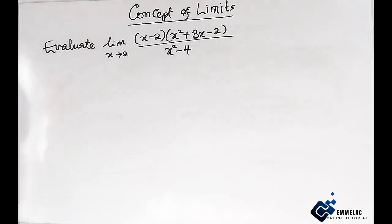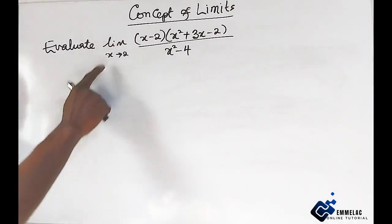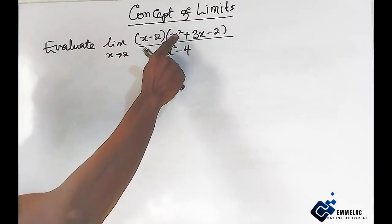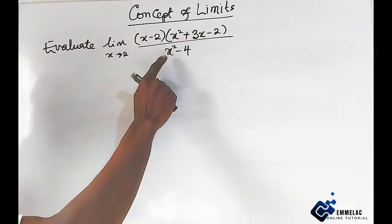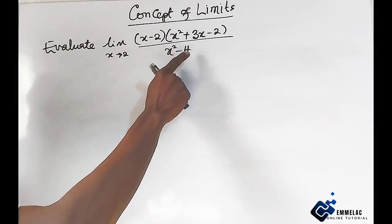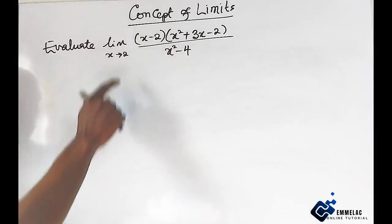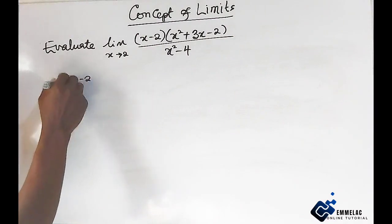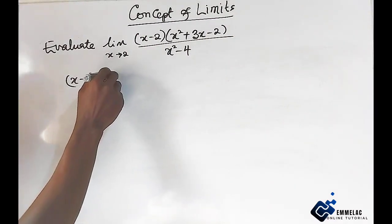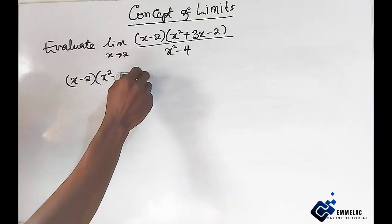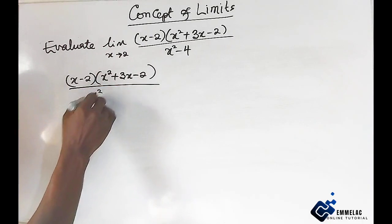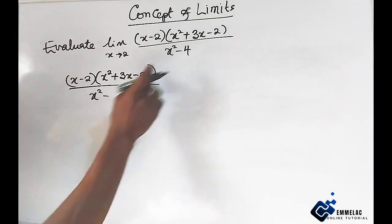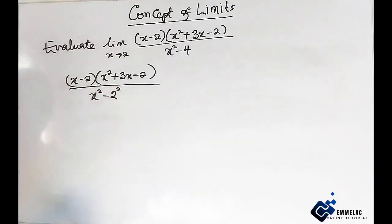Let us consider this next question. We have to evaluate the limit of x minus 2, open bracket, x squared plus 3x minus 2, close bracket, all over x squared minus 4, as x approaches 2. Let us reduce this expression. We have x minus 2 times x raised to the power of 2 plus 3x minus 2, all over x raised to the power of 2 minus 4, which can also be written as 2 raised to the power of 2.